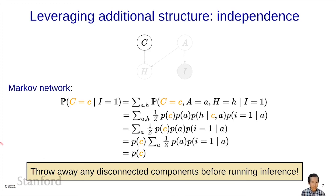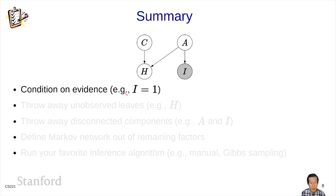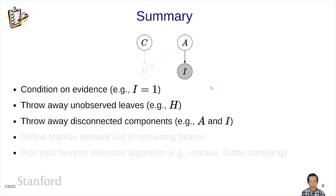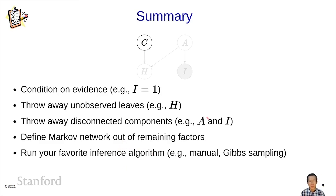To summarize, we tackle probabilistic inference in Bayesian networks by reducing the problem to inference in a Markov network. To prepare the Markov network: first, condition on the evidence by substituting evidence values into the factors; then, optionally, throw away any unobserved leaves and any disconnected components — these are optimizations that save work. Finally, define a Markov network over the remaining factors and run your favorite inference algorithm. For simple cases you can compute it manually; for more complex cases, use something like sampling.